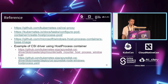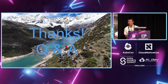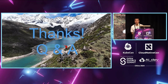That's all for today's session. A question from the audience: how do we develop CSI drivers on Windows? Before, we were still using the CSI proxy — all CSI drivers on Windows needed to rely on the CSI proxy for operations like disk format, mount, and unmount volumes, which required calling the CSI proxy. With the host process container, we can make those calls directly on the node inside the CSI driver.